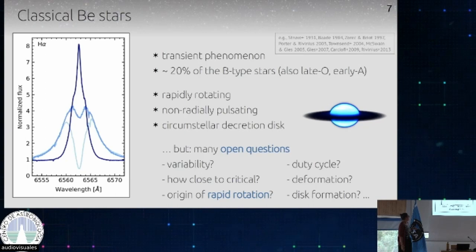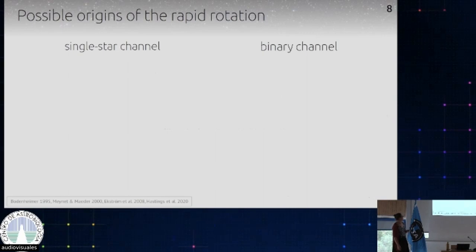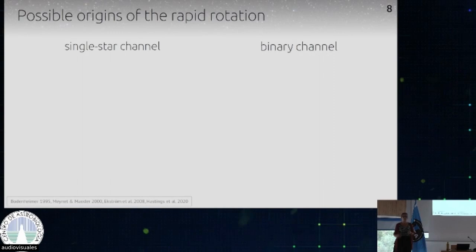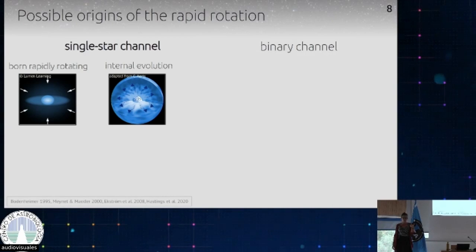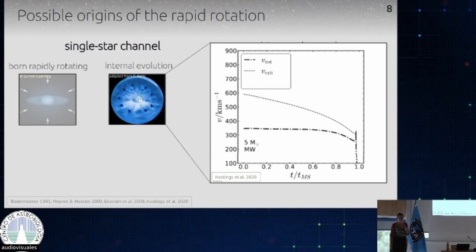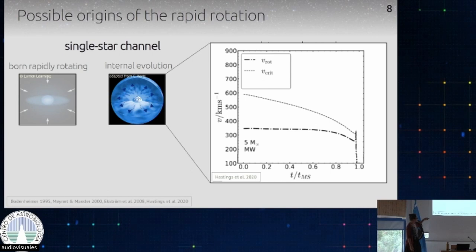The first idea: if we think back to stellar evolution and consider a single star, how could a single star be a rapid rotator? It could be born that way, or it could have gained rapid rotation somehow during its evolution. Observations have shown that probably not many stars are born rotating rapidly. So let's focus on the internal evolution of a star. This figure shows the evolution of a star during the main sequence — time goes from left to right — and it shows how fast the star rotates, here around 350 km/s.